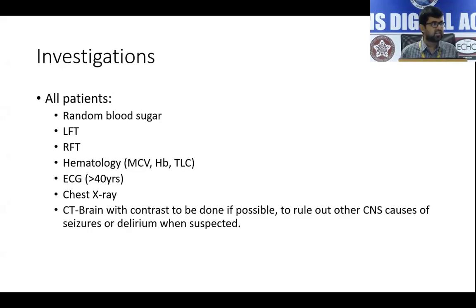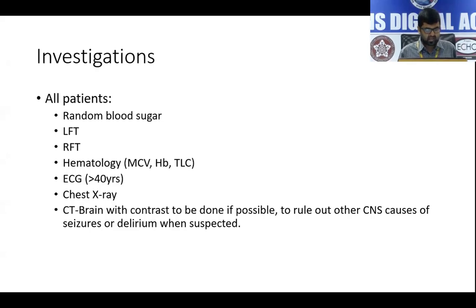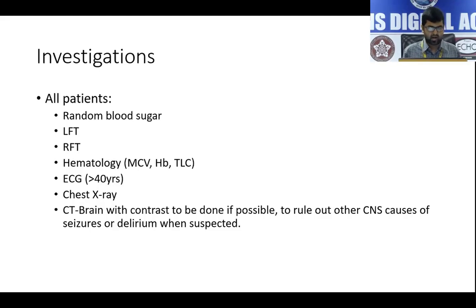These are the bare minimum investigations recommended for these patients, and in most cases they are sufficient to manage an individual with alcohol withdrawal: random blood sugar, liver function tests, renal function tests, serum electrolytes, hematology, and an ECG — which is definitely needed given the high risk of cardiac arrhythmias, particularly above age 40. A chest X-ray is recommended given the increased risk of aspiration and pneumonia. If delirium or seizures are present and other CNS causes are suspected, a CT brain with contrast may also be indicated.